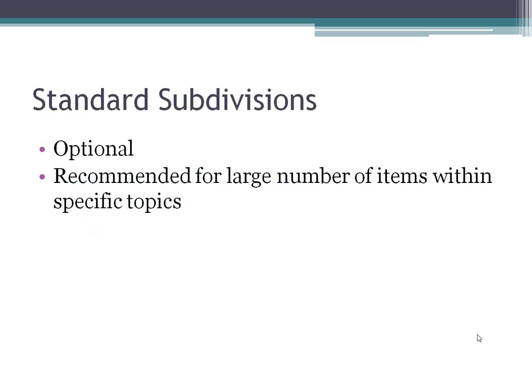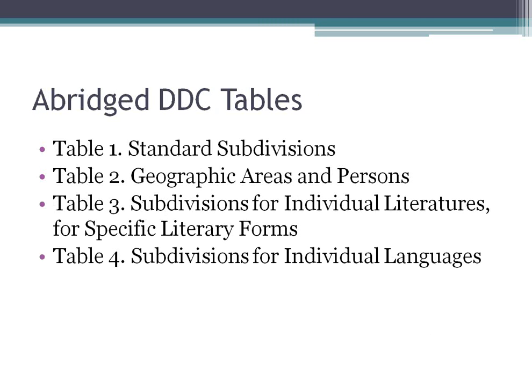Just as a reminder, we started talking about the standard subdivisions last week. They are optional, but they're a way to further subdivide topics and are recommended for a large number of items because it helps browsing and helps your patrons find what they need. Table 1 is the standard subdivisions; Table 2 is for geographic areas and persons; Table 3 is for subdivisions for literature; and Table 4 is for languages.